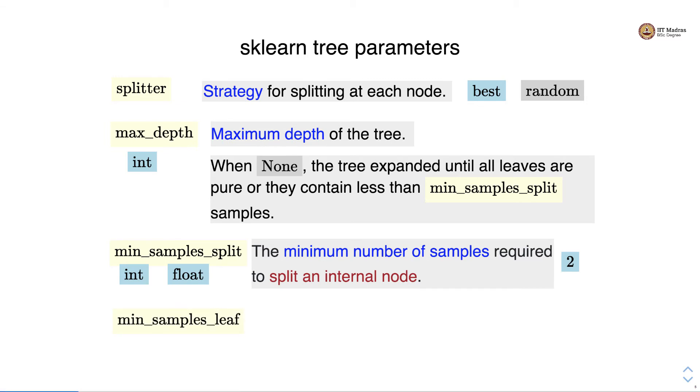Then there is min_samples_leaf that specifies the minimum number of samples required to be at a leaf node. By default the value of min_samples_leaf is 1. Just like min_samples_split it can take both integer and float values.